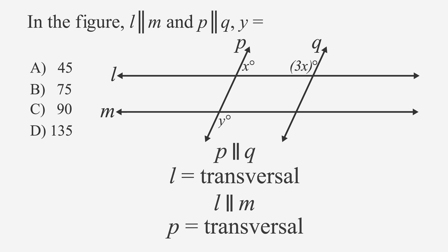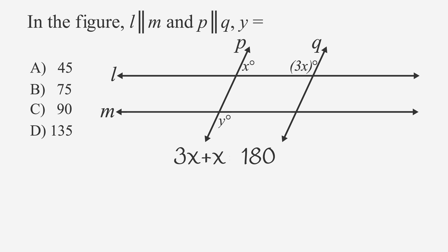The corresponding angle to X is the angle just above Y, as both are in the same relative position. Because X and 3X are on the same line, we know that they have to add up to 180 degrees. 3X plus X is equal to 180, or 4X equals 180.